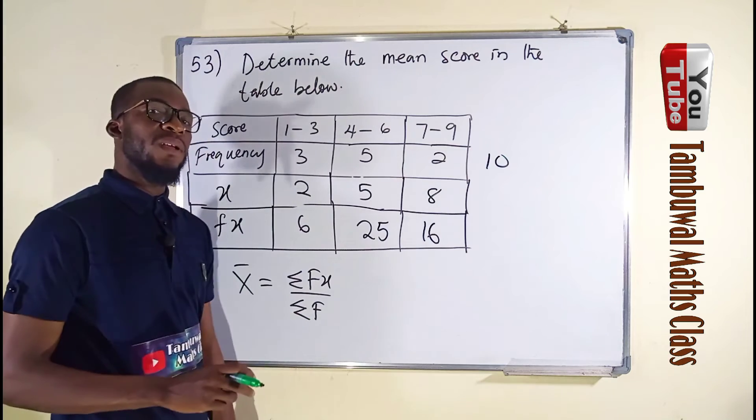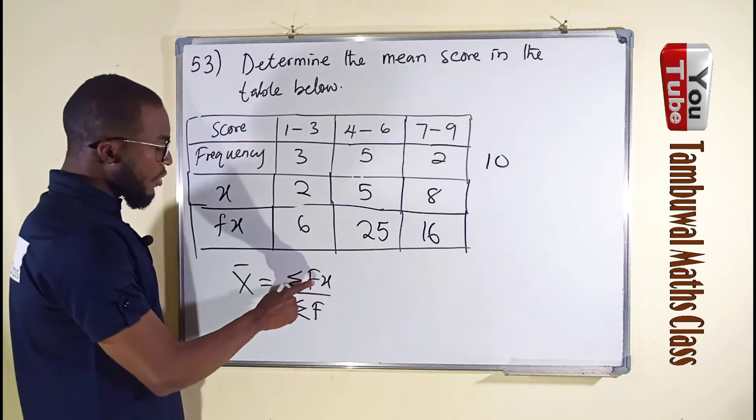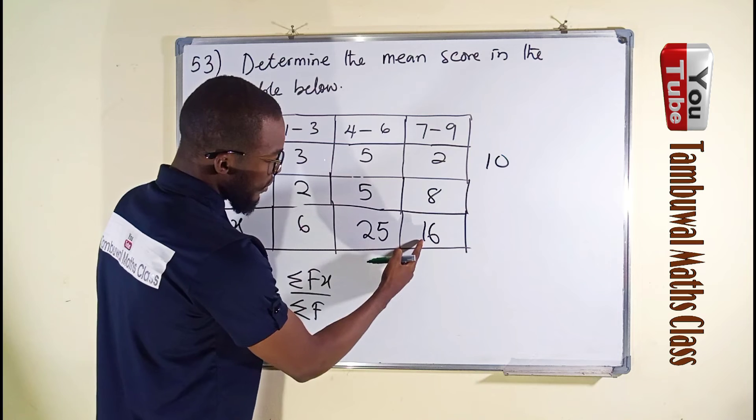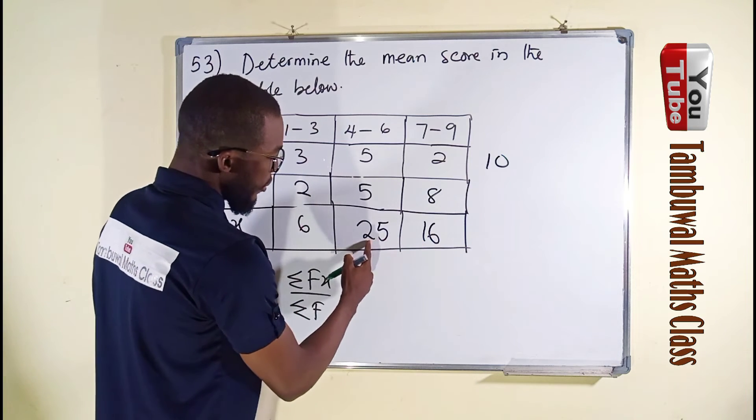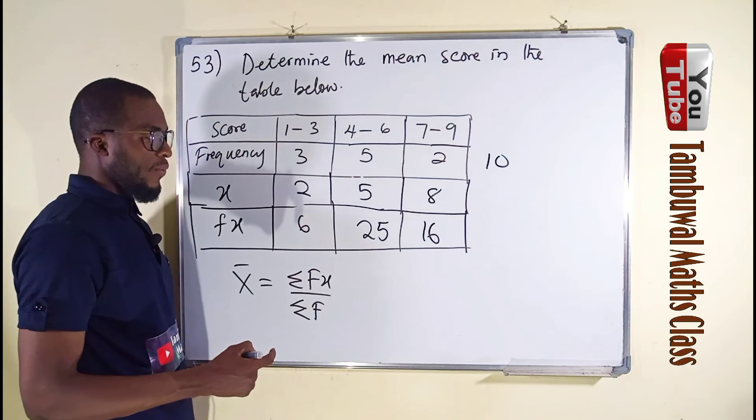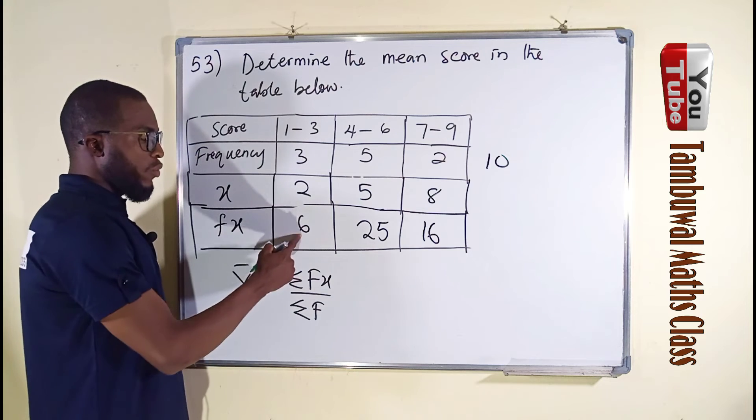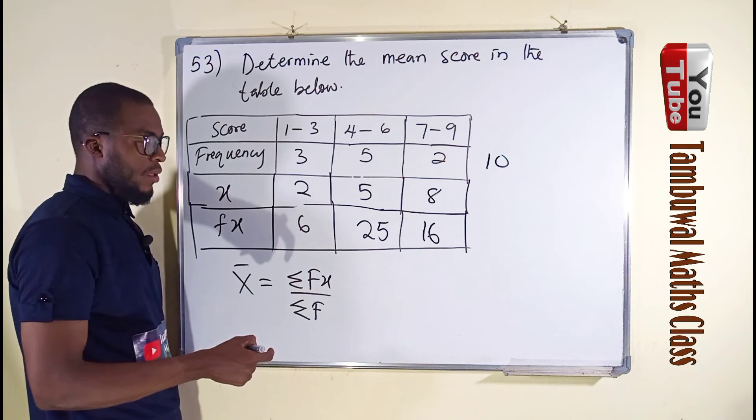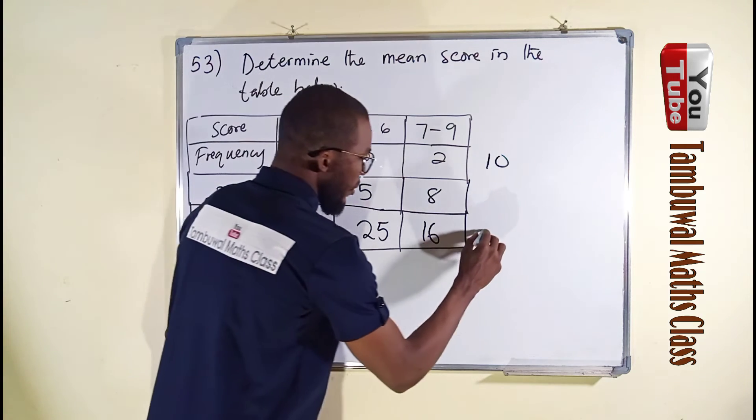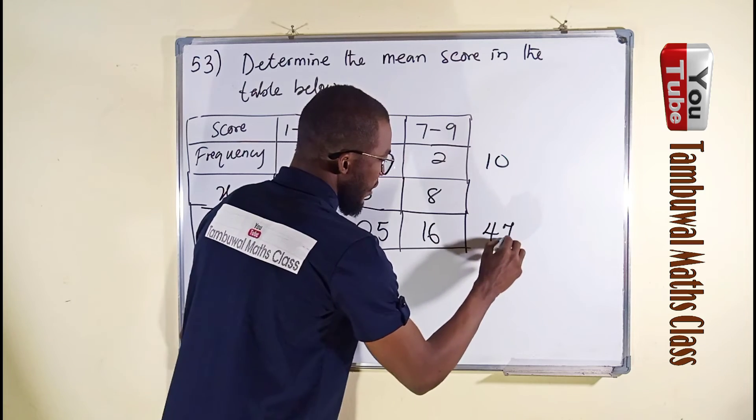Summation of f is 10. The summation of fx, you can see here, 16 plus 25 is 41. 41 plus 6 is 47, so we have 47 here.